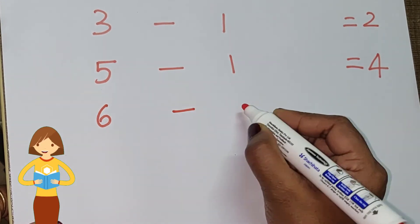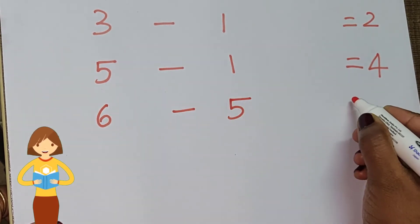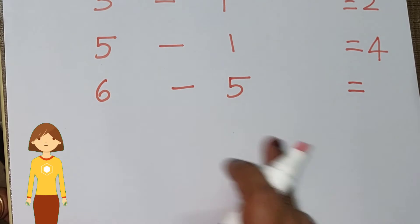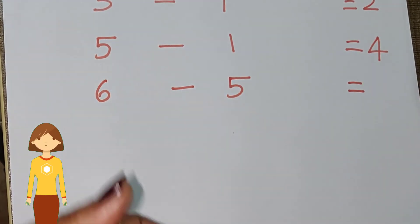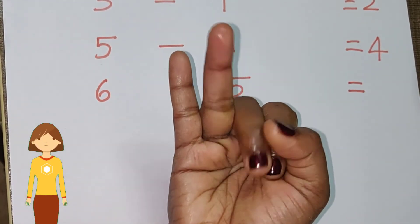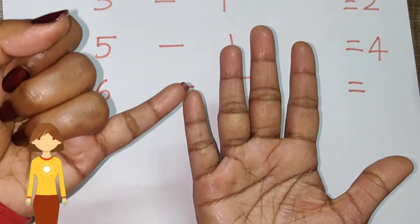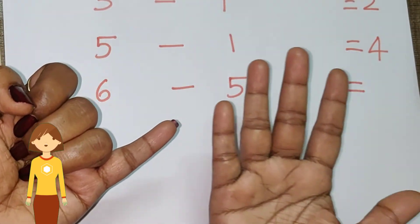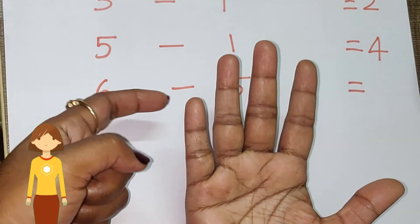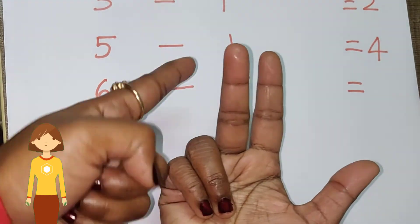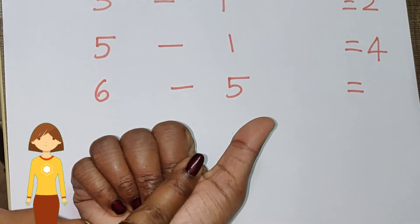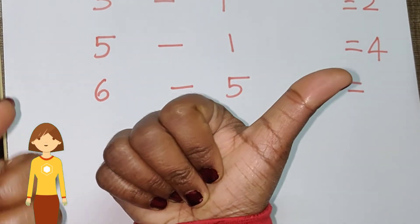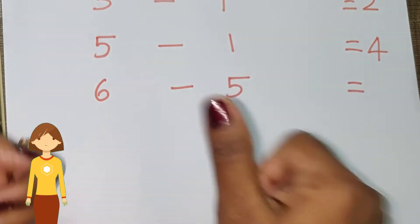Next: six minus five is equal to dash. Six in fingers — one, two, three, four, five, six. I am going to close five fingers — one, two, three, four, five. Remaining: only one finger is open. So the answer is one.